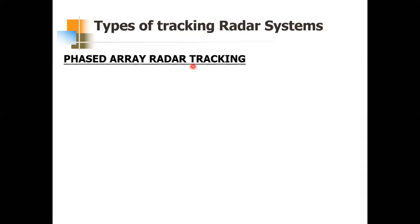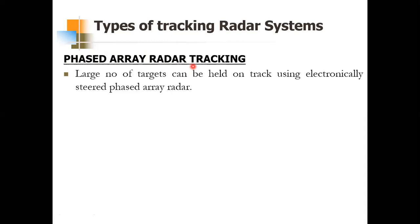The third type is Phased Array Radar Tracking. The main advantage is that a large number of targets can be held in track using an electronically steered phased array radar. The advantages of both STT and ADT are combined in phased array radar: it can hold a large number of targets simultaneously, and multiple targets are tracked on a time-shared basis under computer control.